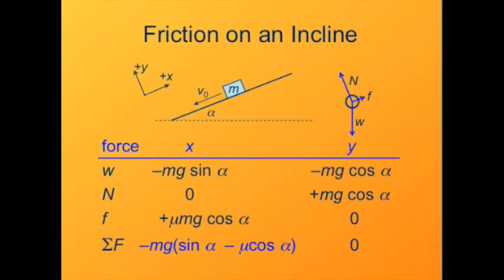If mu is very small and we can neglect mu cosine alpha, the object accelerates downhill — sliding freely with weight pulling it down. If friction is great enough that mu cosine alpha is greater than sine alpha, the net force becomes positive — uphill — and even though the object is sliding downhill, it will slow down. If the force of friction exactly cancels the x component of weight, the object slides down the ramp at a constant speed.